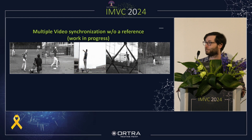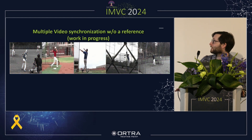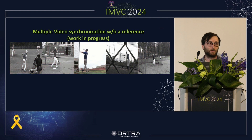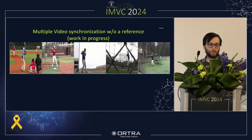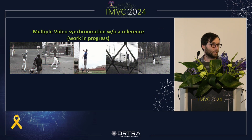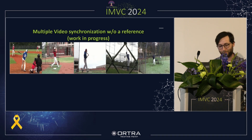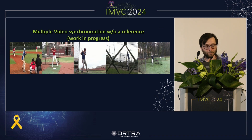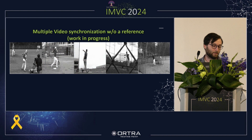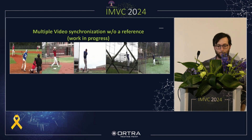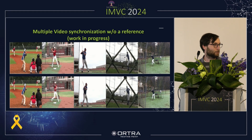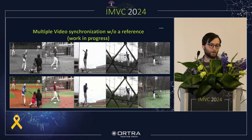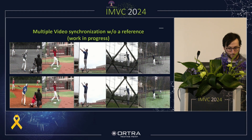There are lots of videos today, so let's look at some. We have some kind of category or prototype, and we want to synchronize the videos. One possible solution is to use a reference, as shown in the previous talk. But one problem is that the reference might be noisy. So what we might want to do is jointly align the videos. As you can see, the actions are aligned even though they are of different lengths, different views, and involve different people.